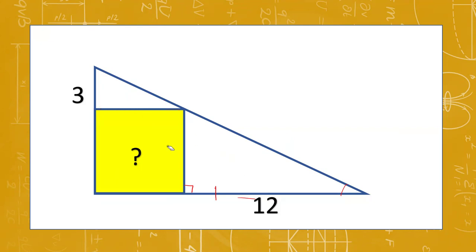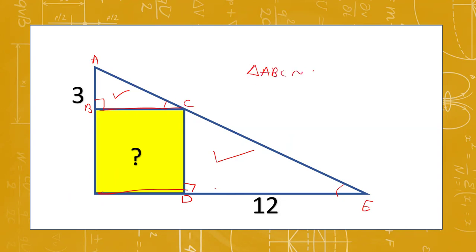Let's explain once again. These two triangles have one angle of 90 degrees, and this angle equals this angle because these two sides are parallel — they are sides of the square. So let's name the points of this triangle as A, B, C, D, and E. Triangle ABC is similar to triangle CDE.